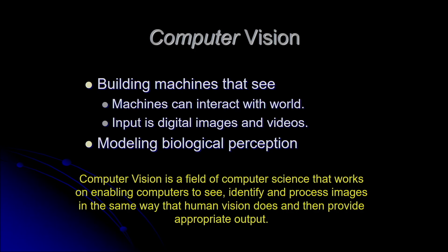What is computer vision? Computer vision is a field of computer science. The objective is to build a machine so that it can process and interpret images and videos just like the human visual system does. It may be a complement of biological vision. The formal definition: computer vision is a field of computer science that works on enabling computers to see, identify and process images in the same way that human vision does, and then provide appropriate output.